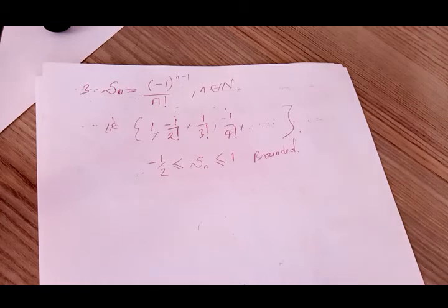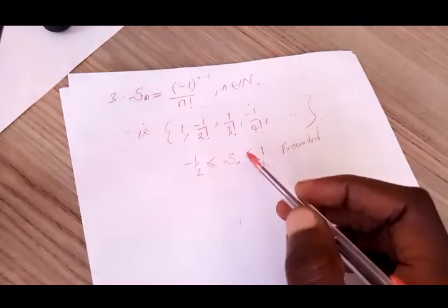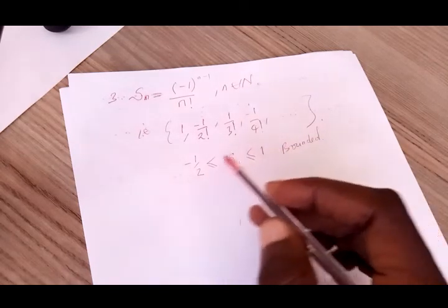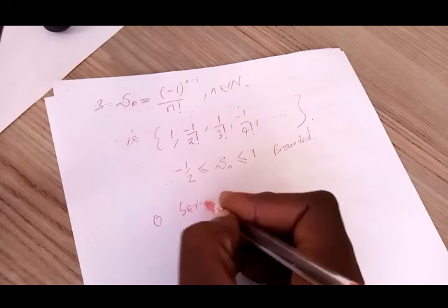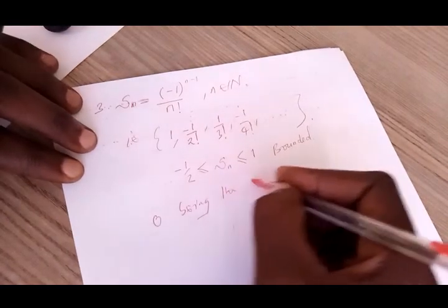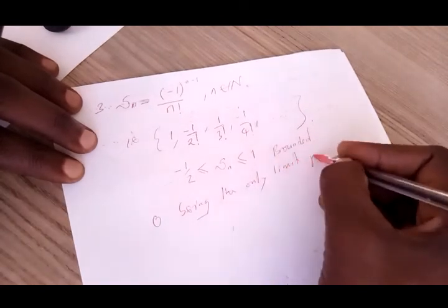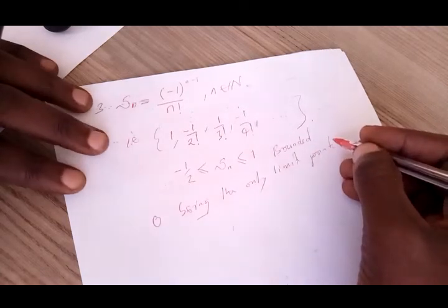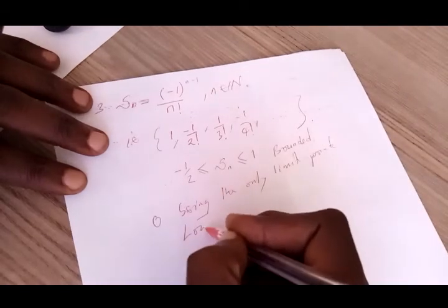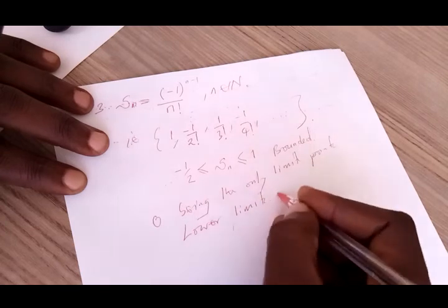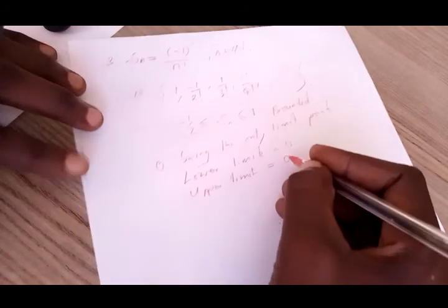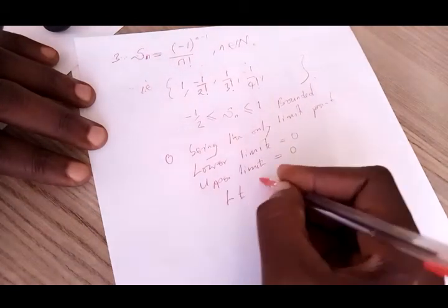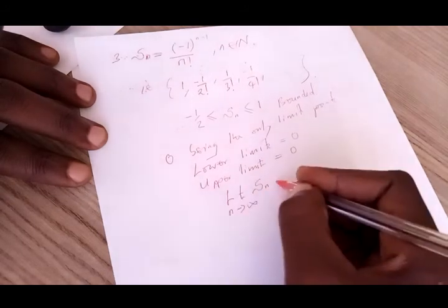The question is: how many limit points do we have here? There is only one limit point. According to the definition of limit points, the only possible limit point between -1/2 and 1 is 0. With 0 being the only limit point, the lower limit is equal to 0 and the upper limit is also equal to 0. Therefore the limit of the sequence Sn as n approaches infinity is equal to 0.